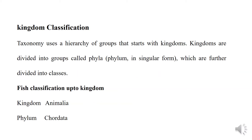Now we will discuss kingdom classification and phylum classification. Taxonomy uses a hierarchy of groups that start with kingdoms. Kingdoms are divided into groups called phyla, which are further divided into classes. Kingdom classification is the highest classification method in taxonomy, ranked above the phylum.